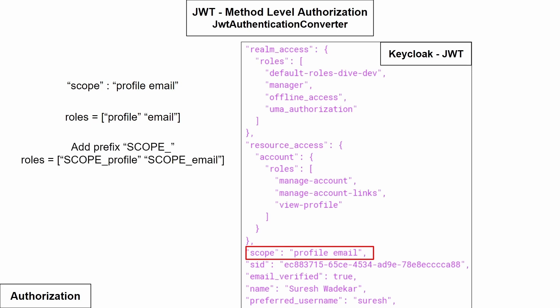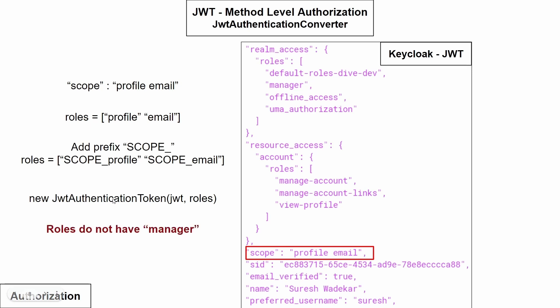The next step adds the prefix 'scope_', so the roles look like 'scope_profile' and 'scope_email'. Using these roles it creates a JwtAuthenticationToken, which means the role 'manager' — which is present in the Keycloak access token — is not included. The default JwtAuthenticationConverter of Spring Boot's OAuth2 resource library does not recognize the manager role, so it validates authorization based only on those two scope roles.